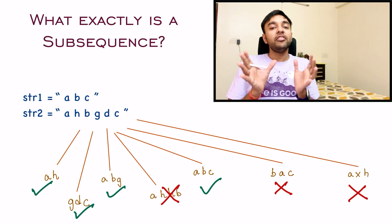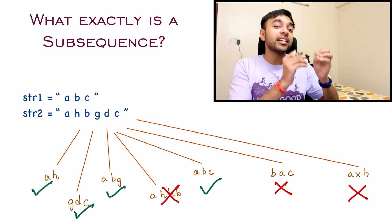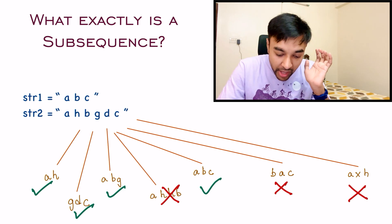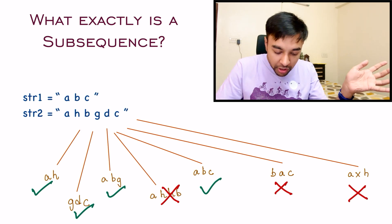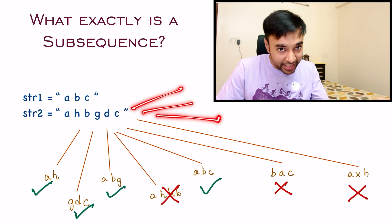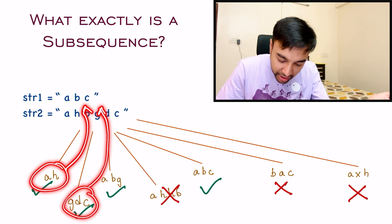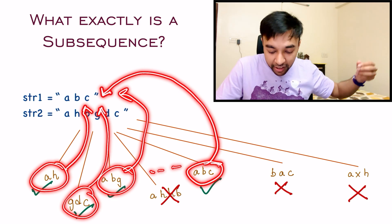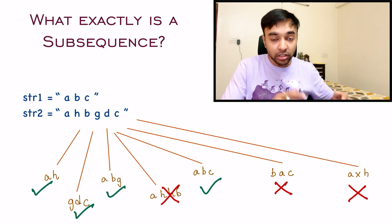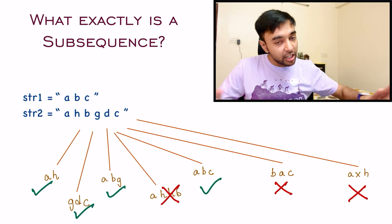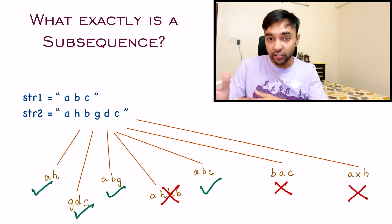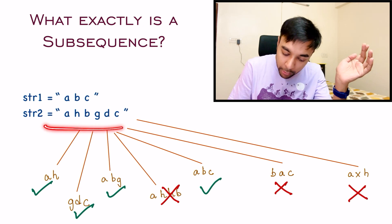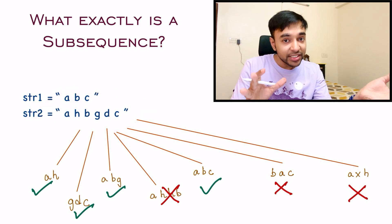By now you should understand what a subsequence means: the characters do not need to be contiguous in the original string, but they must appear in the same order — that is the prime condition. Based on this, you can come up with a brute force solution: generate all possible subsequences of the second string, then check if any of them equals string one. This approach gives a correct answer every time, but the problem is it takes a lot of time to generate all subsequences, so it is not time efficient. You need a solution that works efficiently even when the string is very large.